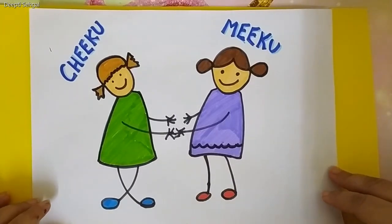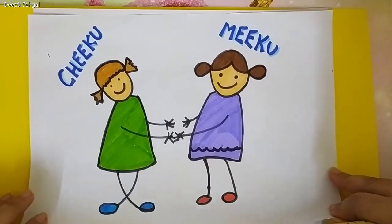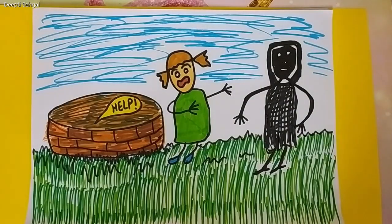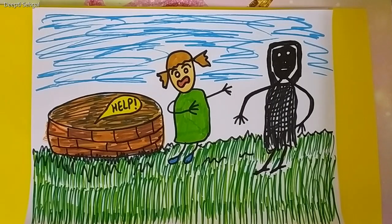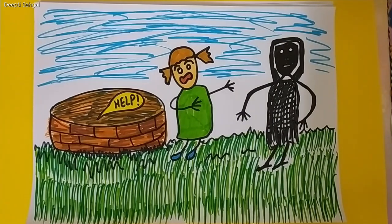And then, Chiku was very helpless. She thought, What to do? And she moved around to yell for help. But she saw a black and white ghost who is standing in front of her. Who is he? A ghost or a black and white person? Who is he?